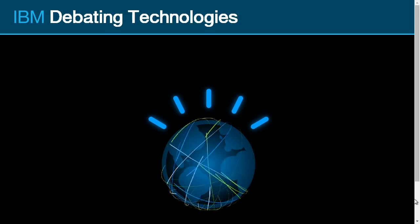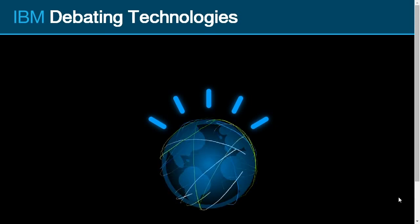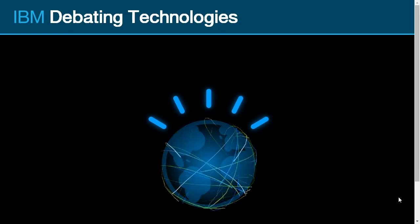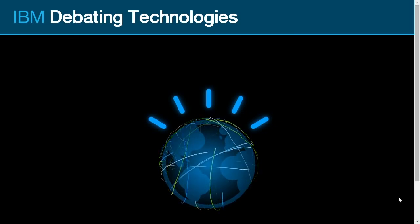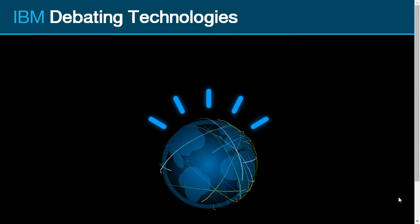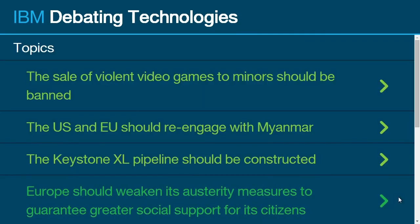If we could roll the video, please. Welcome to the IBM debating technologies demonstration. Today we shall focus on detecting relevant claims. Please select the topic, and I will share with you my top predictions for pro claims and con claims. We could throw any subject at it — I've chosen some here — and let's just pick the first one. It will now look for all the literature and try to understand, as a computer, what's a pro and what's a con for violent video games.